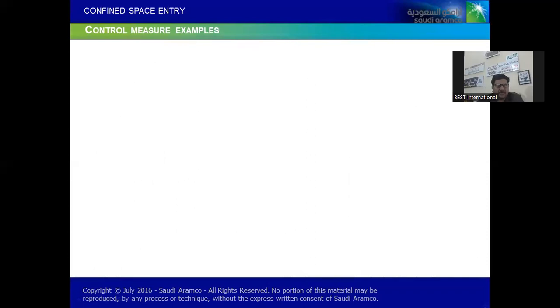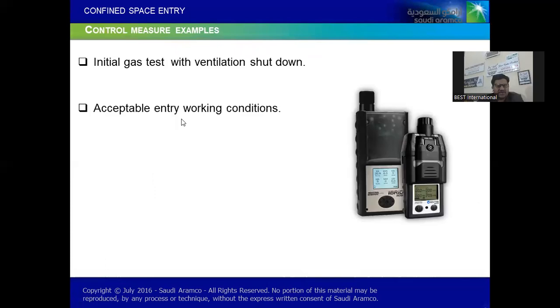Few more control measures - initial gases with ventilation shutdown and acceptable entry working condition must be there. Continuous monitoring when required as per the nature of your project. I hope you remember in previous lectures I have clearly mentioned the continuous monitoring of the atmosphere is also important. And it must be monitored through authorized gas tester or must have some fixed gas detectors as well. Evacuation of the space.